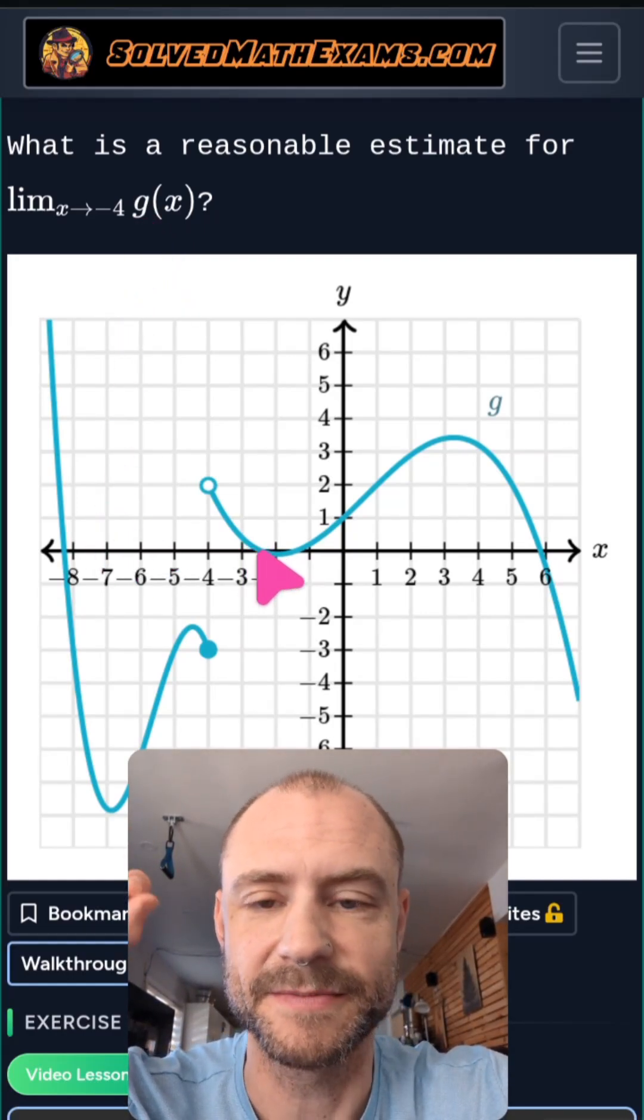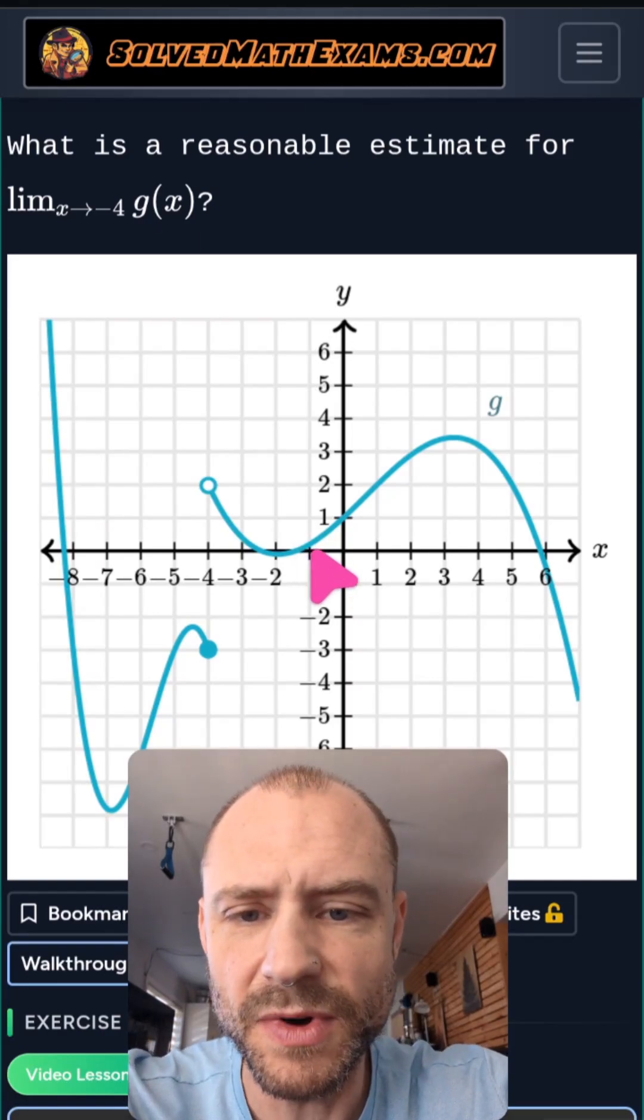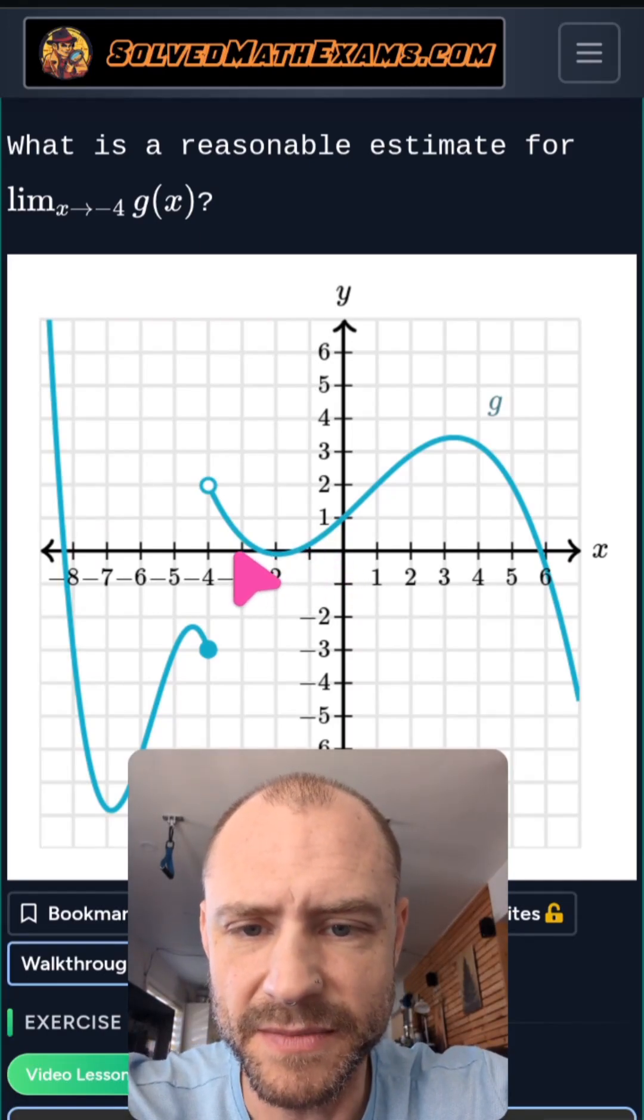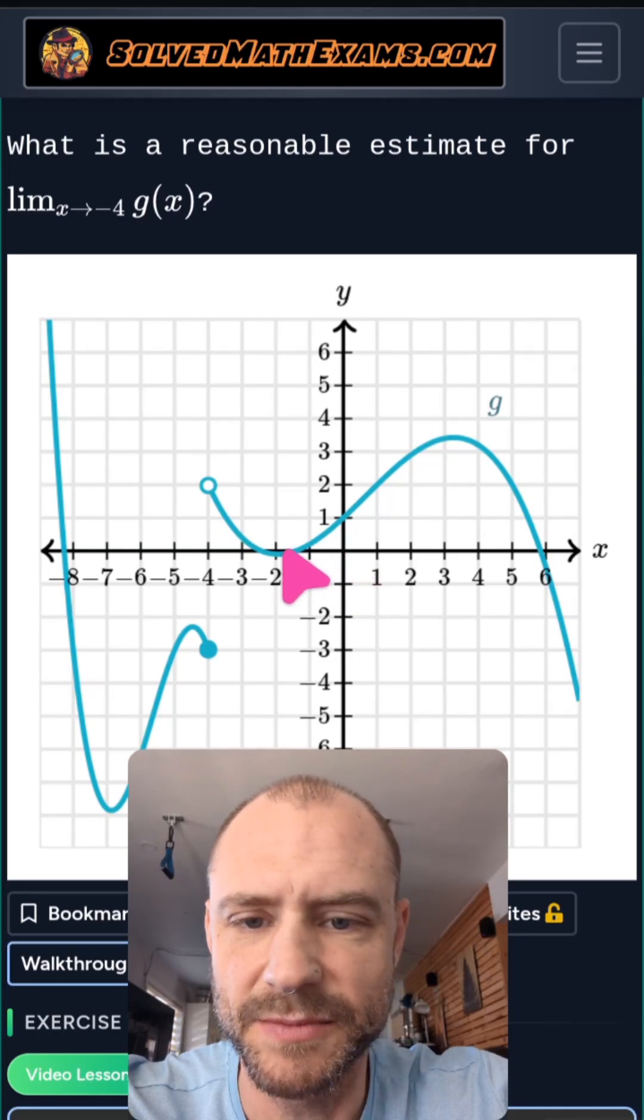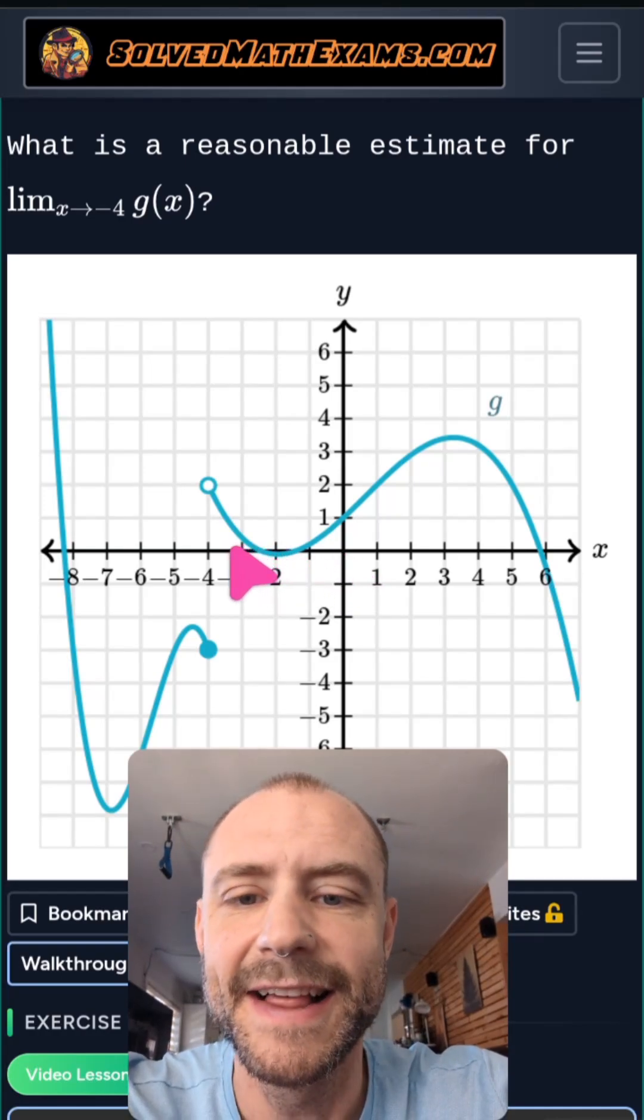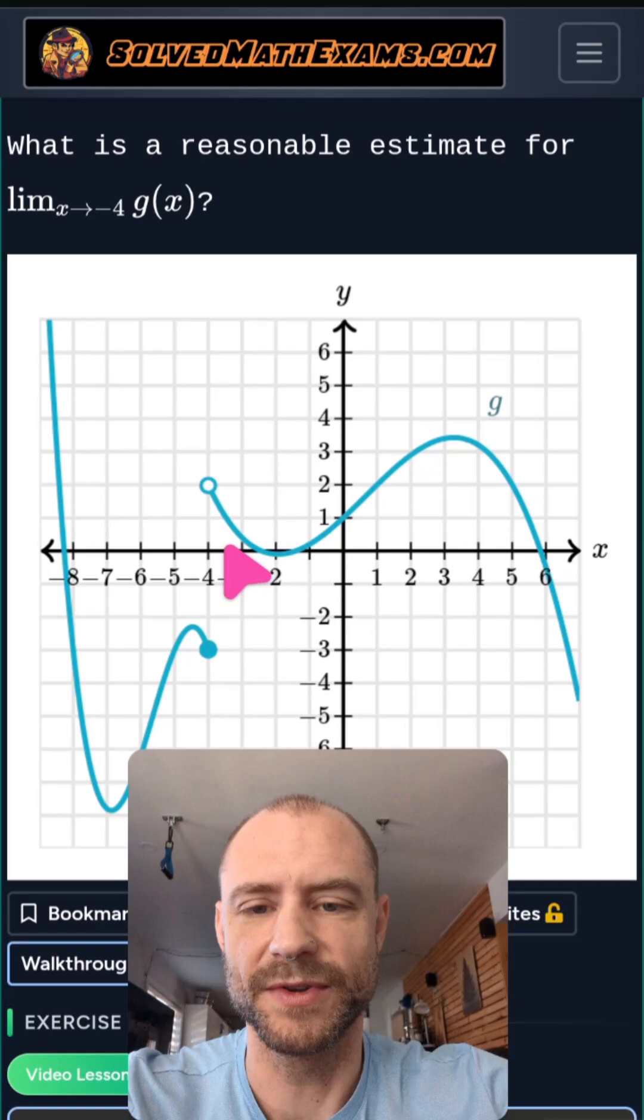So how do we do this? Well, if we look coming from the right, so this is approaching negative 4 from the right, you start over here and then you come over to the left actually. But this is what's considered approaching from the right.